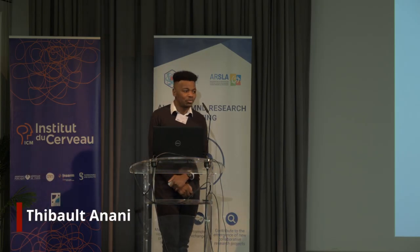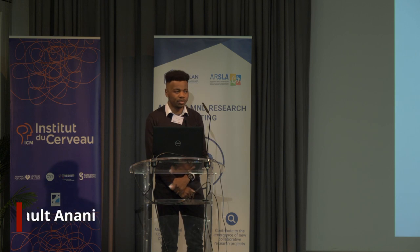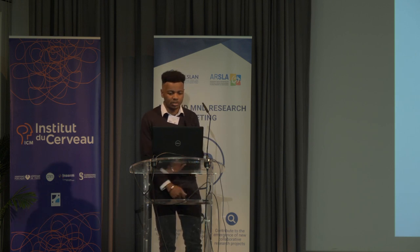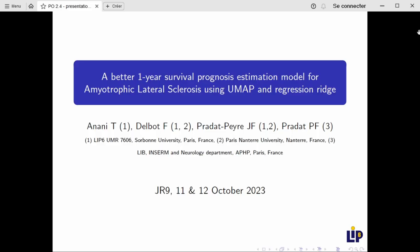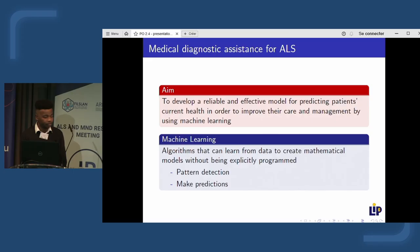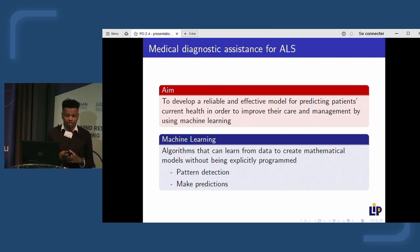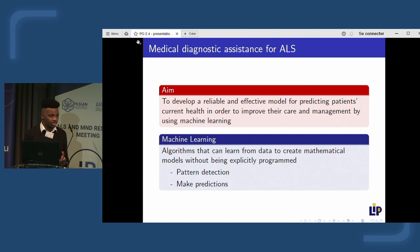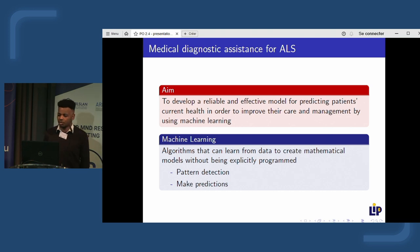Hello everyone. I'm really glad to present my work, which deals with a one-year survival prognosis estimation model for amyotrophic lateral sclerosis using UMAP and ridge regression. The aim of this study is to develop a medical diagnostic assistant for ALS using artificial intelligence and machine learning, to create a reliable and effective model for predicting a patient's survival in order to improve their care and management.